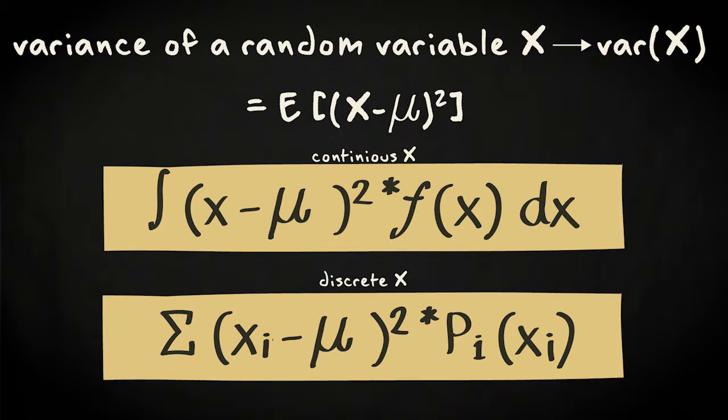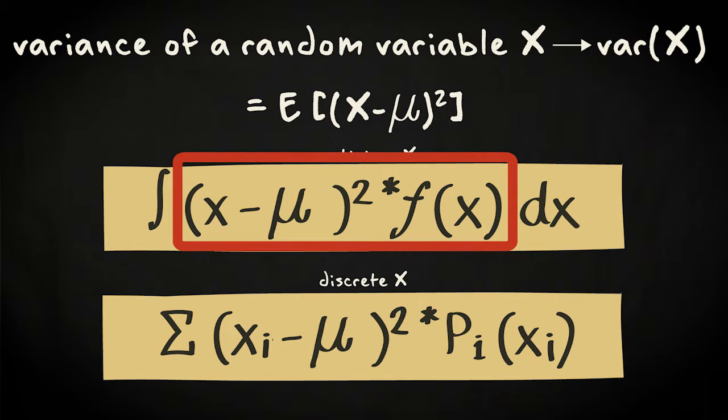Calculating the variance for a continuous random variable is difficult because you would need to integrate this function. But for a discrete random variable it's less complex than it may seem. Let's take an example.